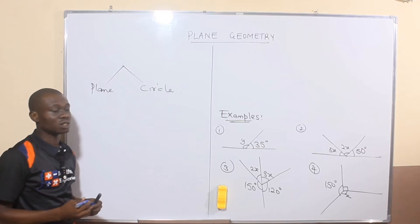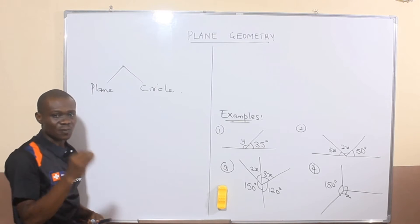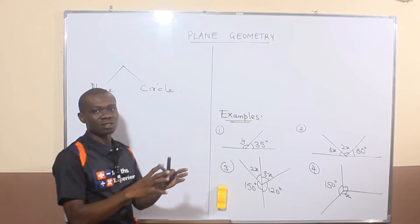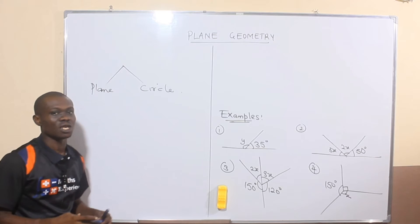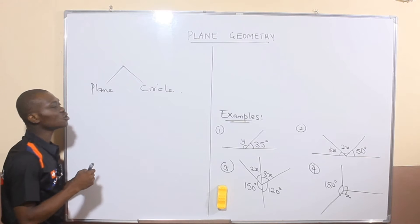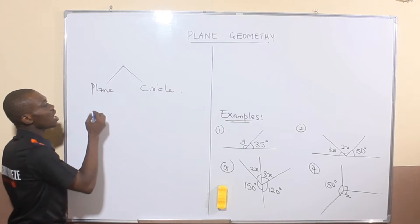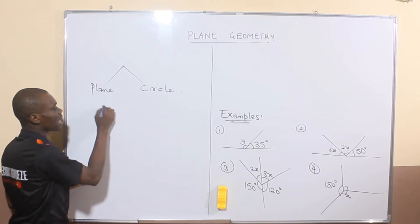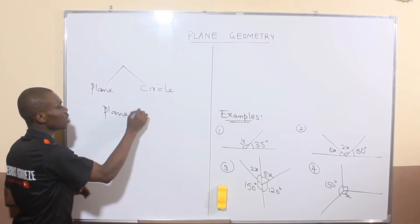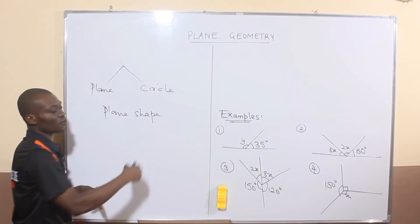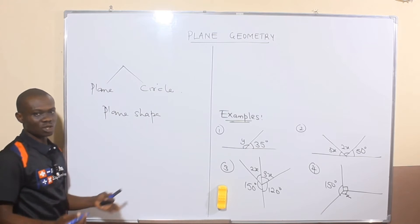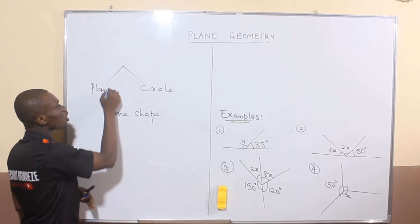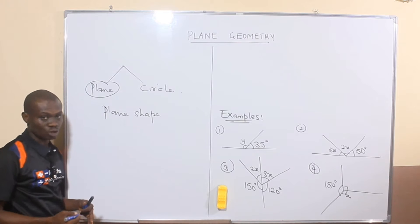What is geometry? Geometry has to do with the aspect of mathematics that involves the angles formed by different shapes. If the angles we are discussing are formed by plane shapes — starting from normal straight lines, triangles, and other polygons — then we call that geometry plane geometry.